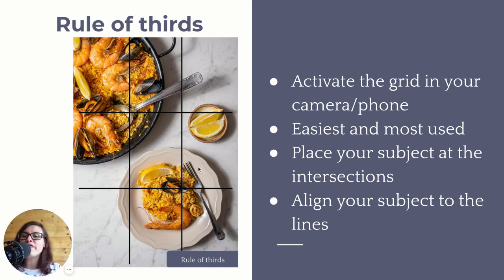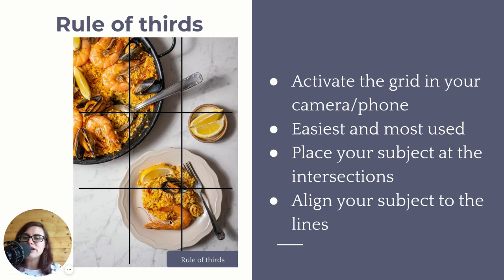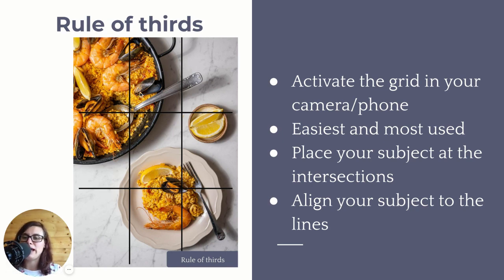Our eyes are drawn first to the four intersection points where the lines of the grid intersect. That's where your eyes are more likely to stop and focus, so that's where we need to place our subjects. You can find this grid pretty much everywhere — in your phone, your camera, or in Lightroom. You activate the grid so you know exactly where to place your subject. For maximum impact, you want to place your subject at one of the four intersections: bottom right, top right, top left, or bottom left.